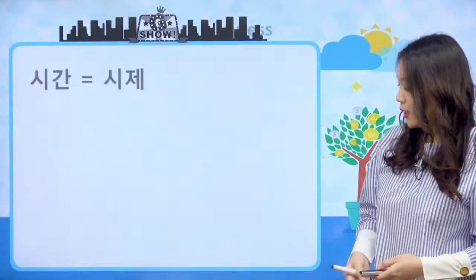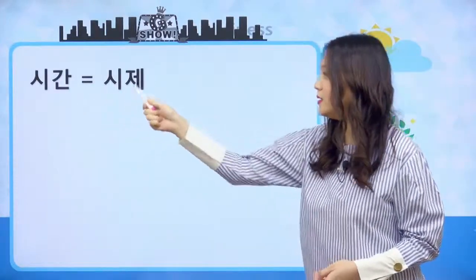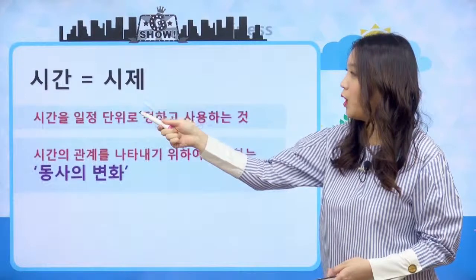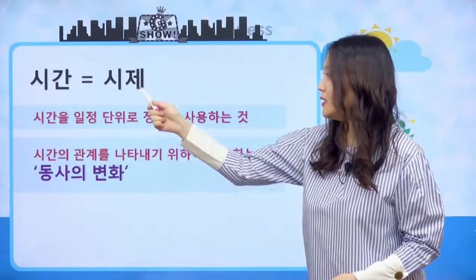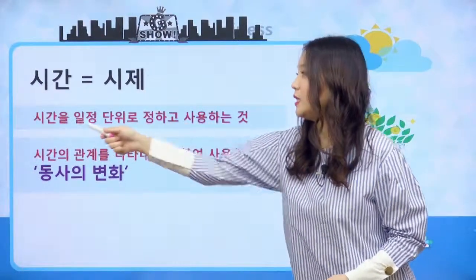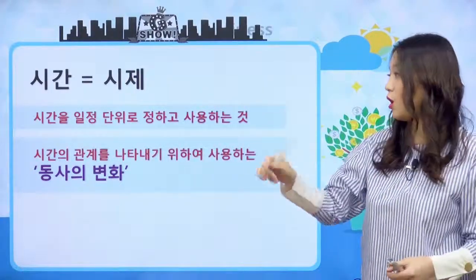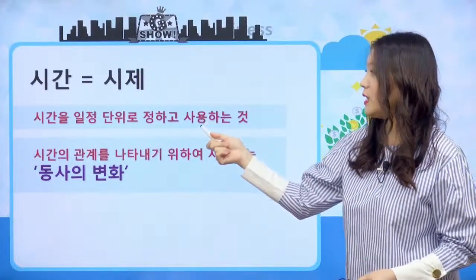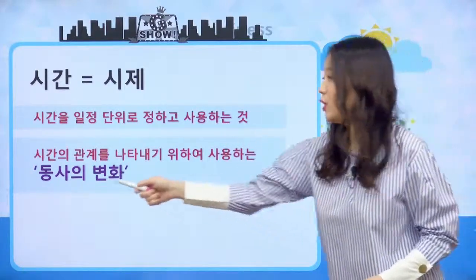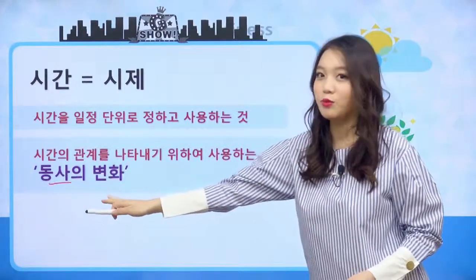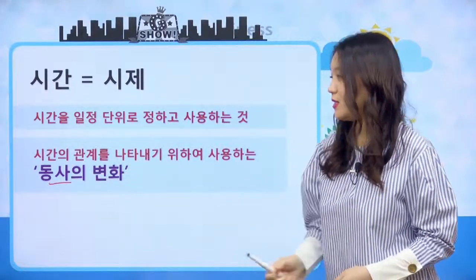지금까지 우리 계속 했던 거 한번 퀵 리뷰하고 넘어갈게요. 우리 계속 시간은 시제다라고 이야기를 했고 이제 이게 무슨 말인지 우리 친구들 알죠? 시제라는 건 뭐예요? 시간을 일정 단위로 정하고 묶어서 사용하는 것을 시제라고 하고, 이 시제는 동사가 변함으로써 나타낸다고 우리 계속 이야기를 했어요.